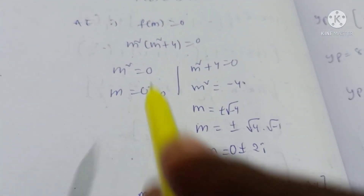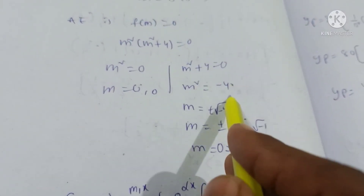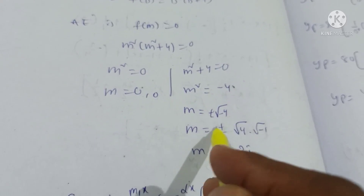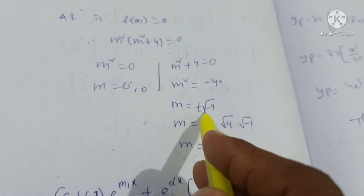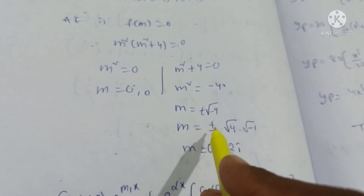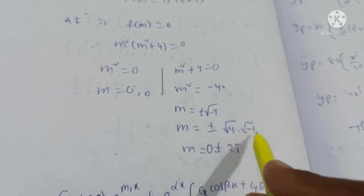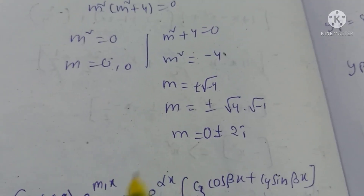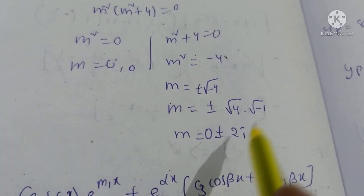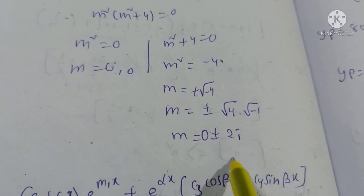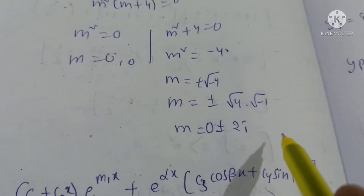From m squared equals 0, m equals 0 (repeated). From m squared plus 4 equals 0, m squared equals minus 4, so m equals plus or minus root of minus 4, which equals plus or minus root 4 into root minus 1, giving m equals plus or minus 2i.